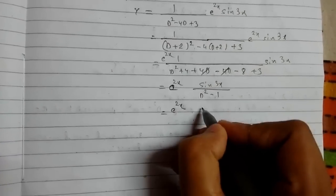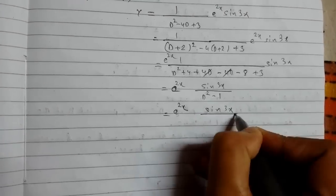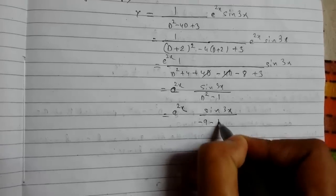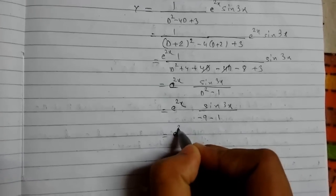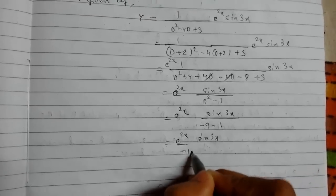So this will be sin(3x), and D² will be -a². This will be -9 plus -1. This will be sin(3x) upon -10.